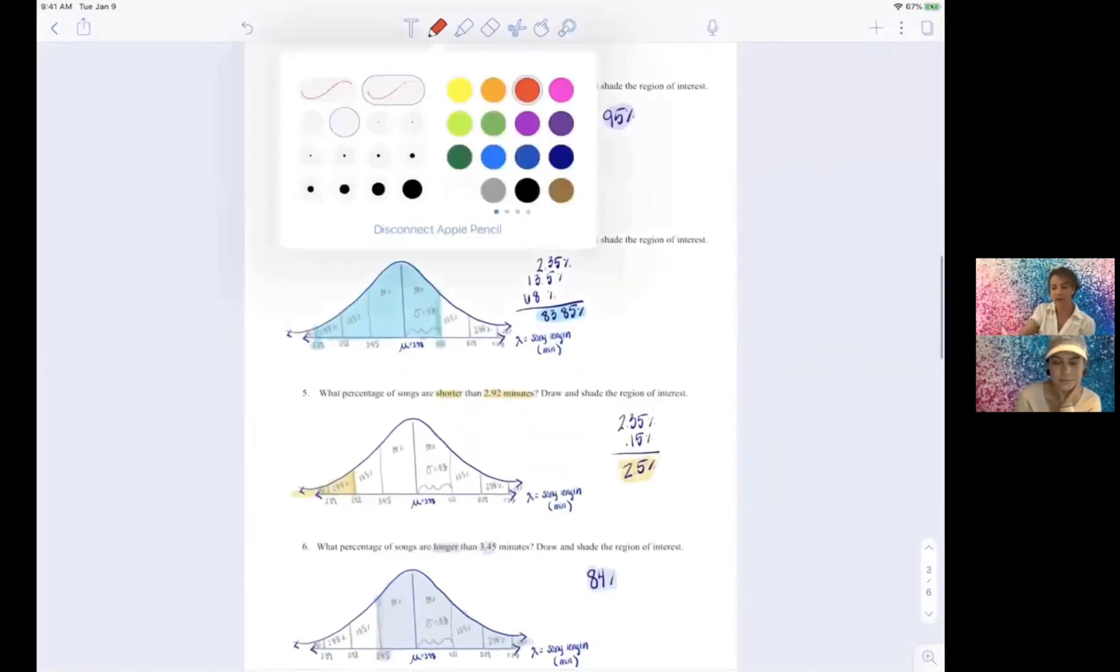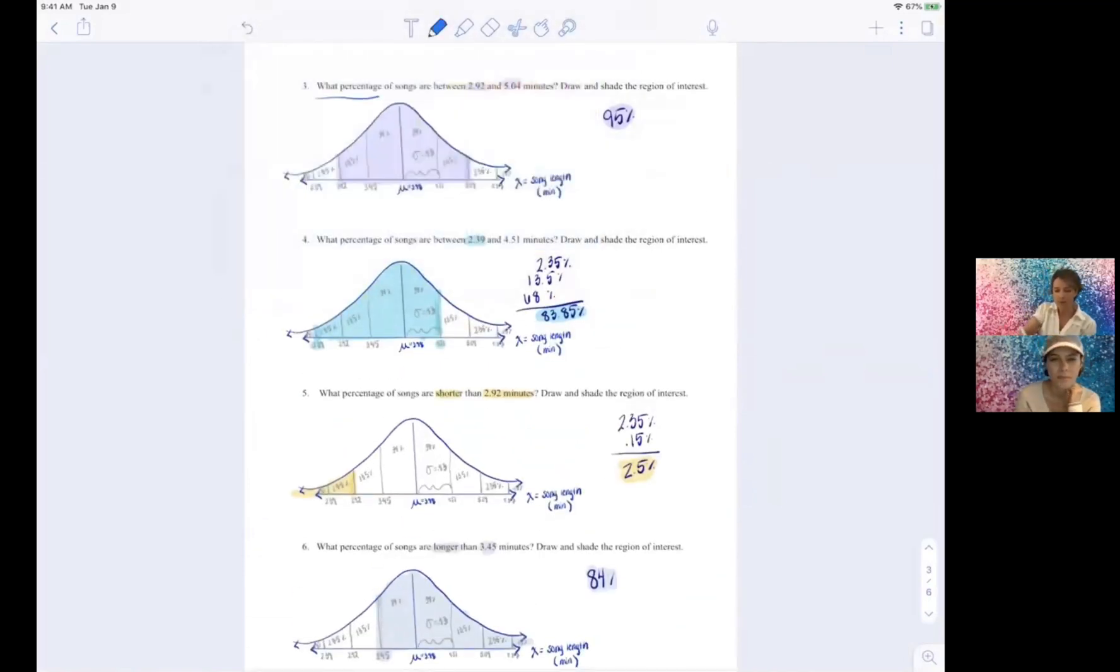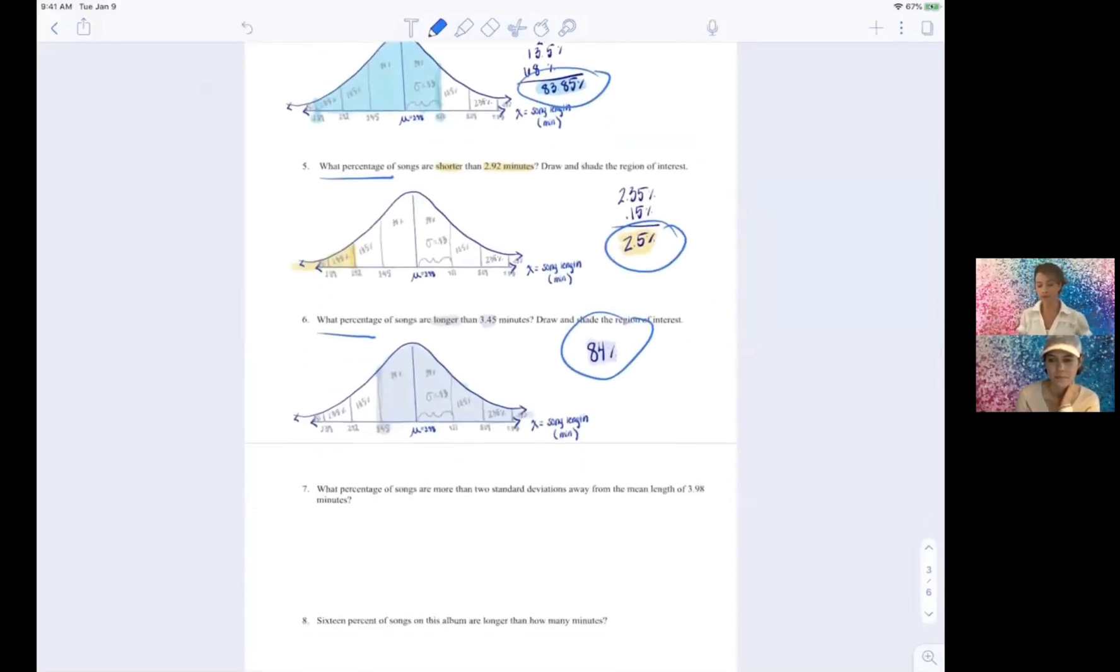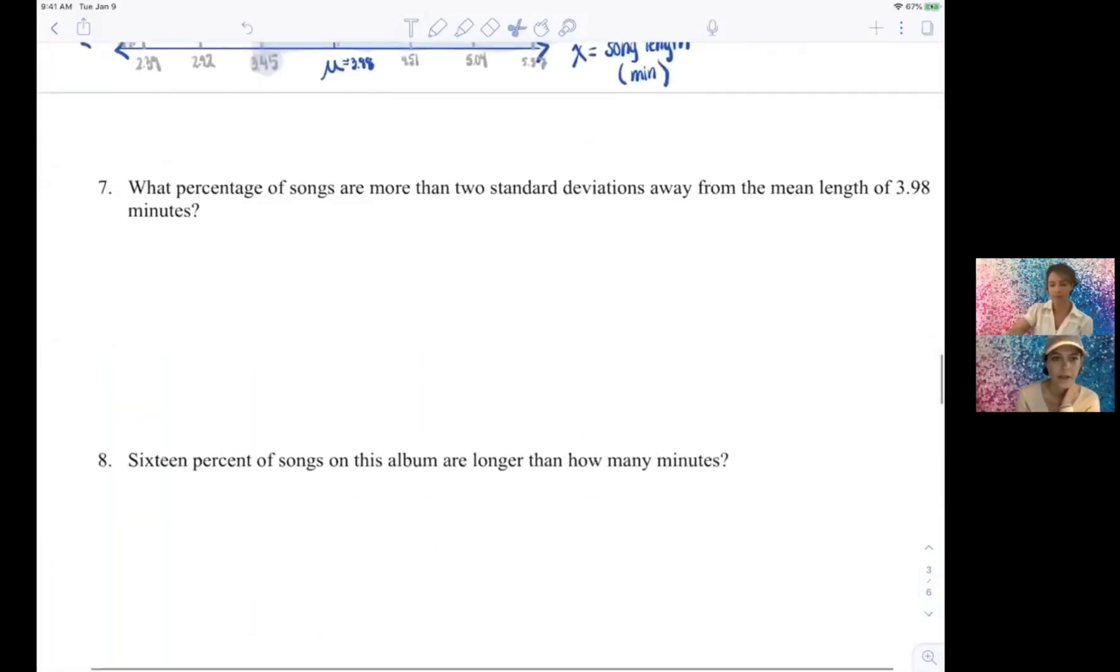Notice that they all, and we're going to continue with a few more like this, but they all said what percentage. Yes, so our answers were percentages, which are also geometrically interpreted as area, right, and they are probabilities and proportions. Let's keep going.